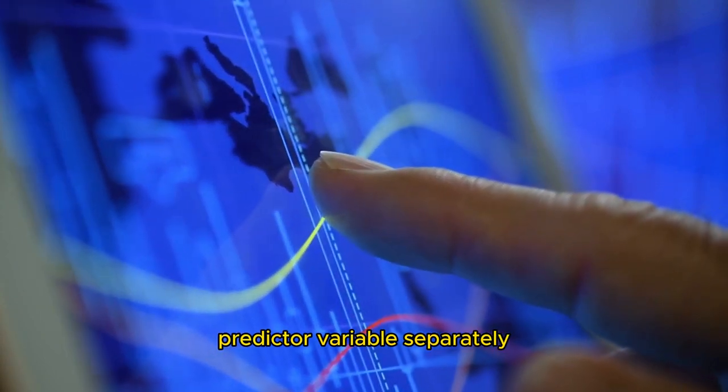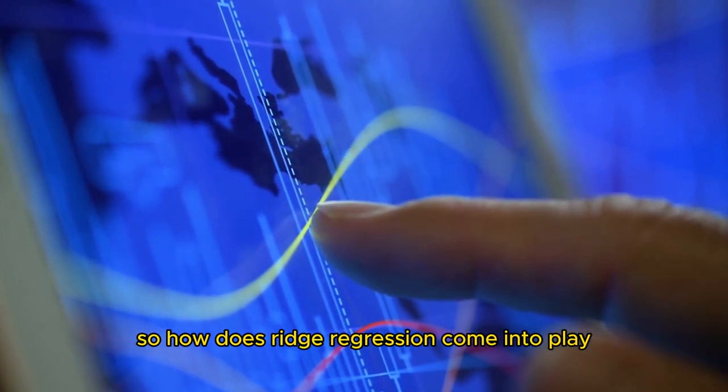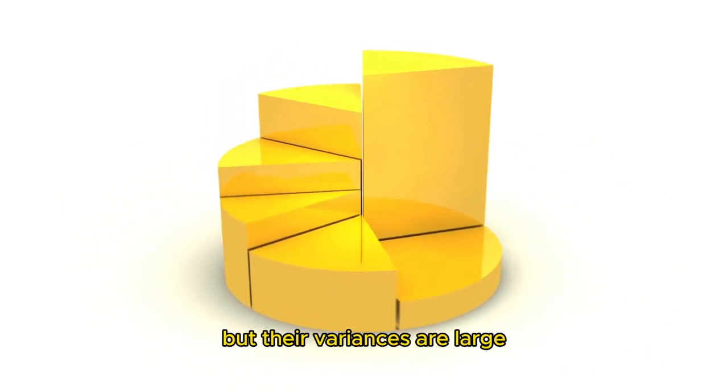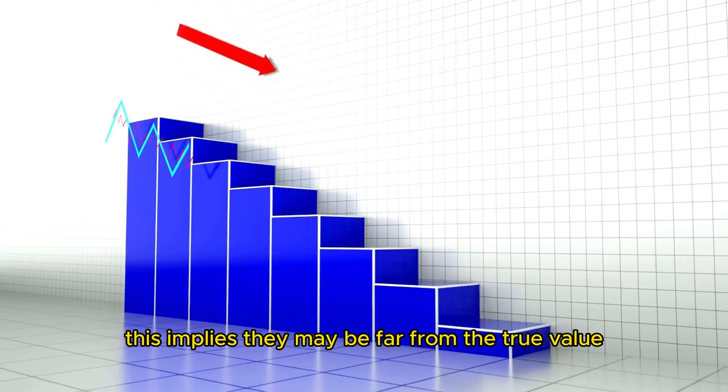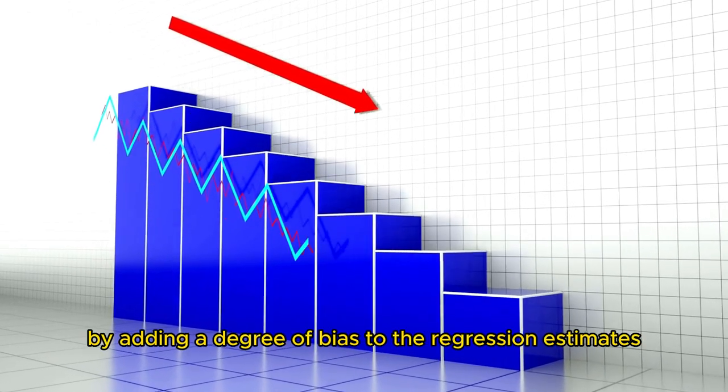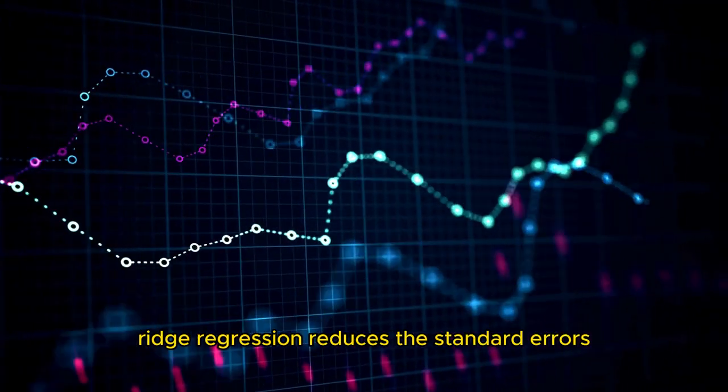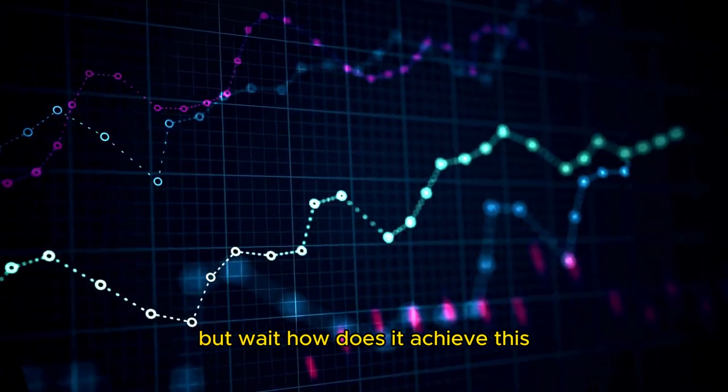So how does ridge regression come into play? When multicollinearity occurs, least squares estimates are unbiased but their variances are large. This implies they may be far from the true value. By adding a degree of bias to the regression estimates, ridge regression reduces the standard errors.